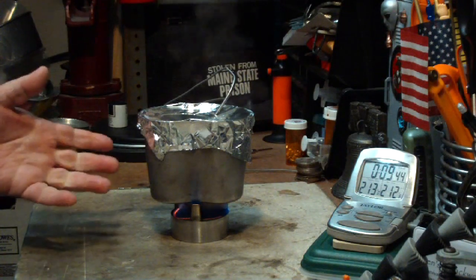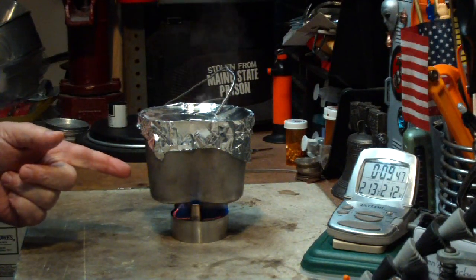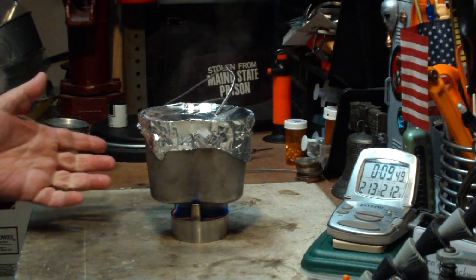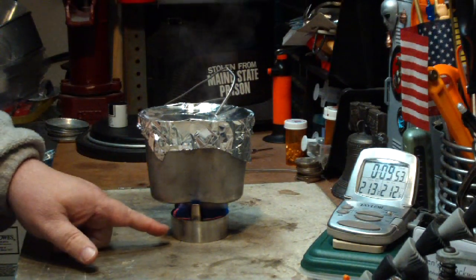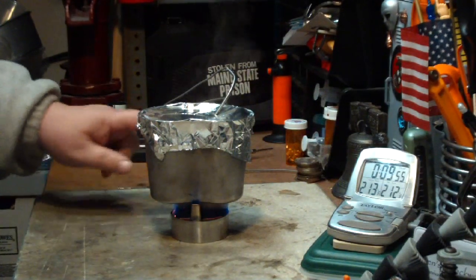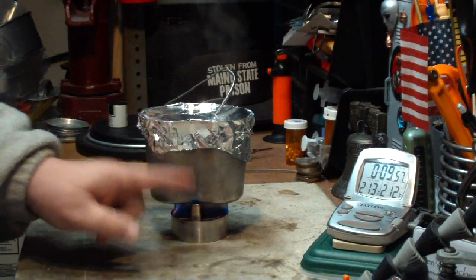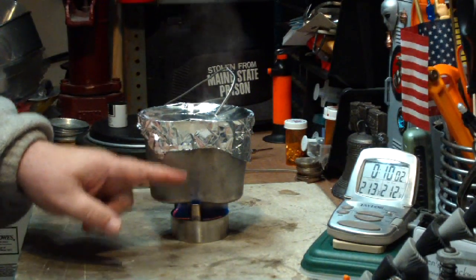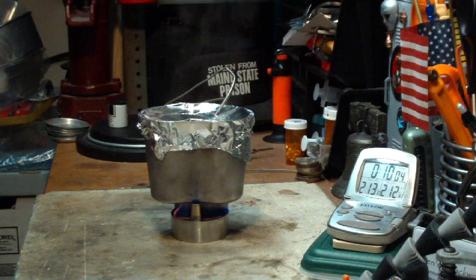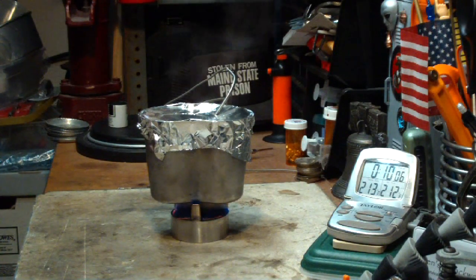But when you consider several things here. A steel pot versus an aluminum pot. A kidney bean shaped pot on a round stove. So there's a lot of spaces where the flames are. In my second camera, you can see the flames coming up the side of the canteen cup.